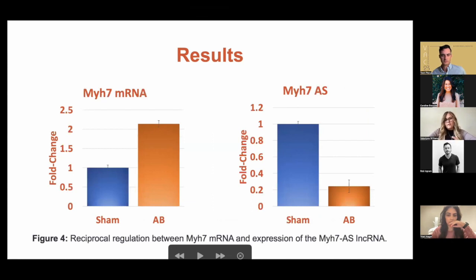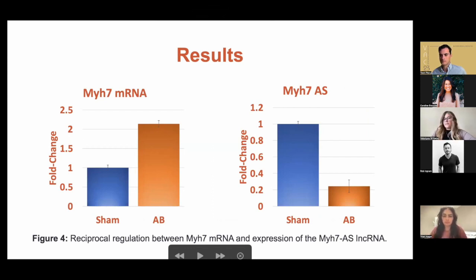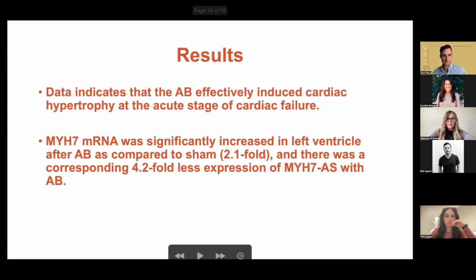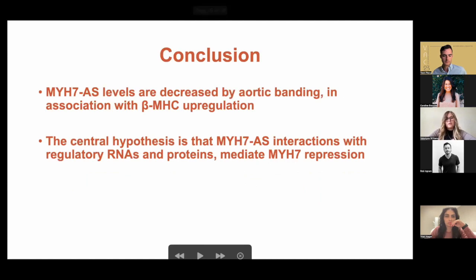We then wanted to look specifically at MYH7 and its antisense strand. Here we saw that there was around a twofold increase in MYH7 in these hypertrophy models, as well as the antisense strand decreased by around fourfold. Our conclusion was that the antisense strands were decreased through this banding in association with the beta myosin upregulation.